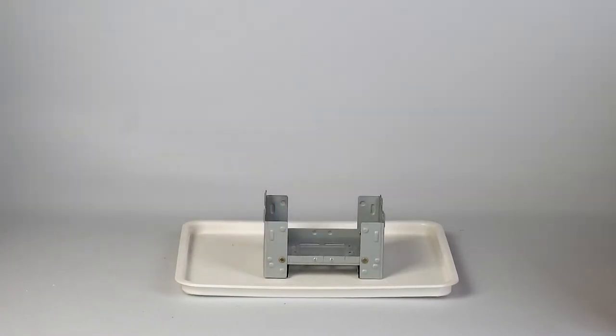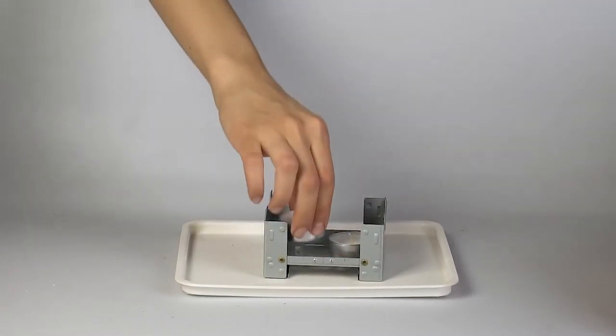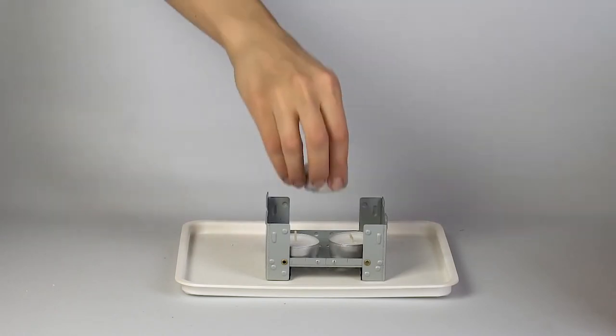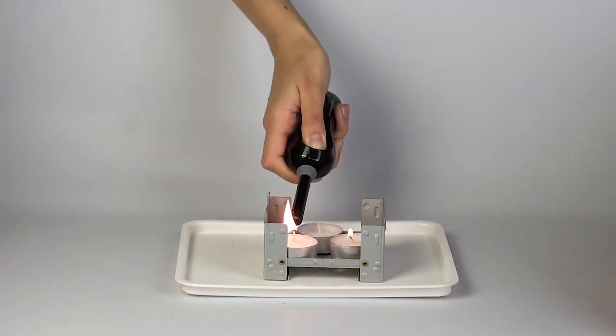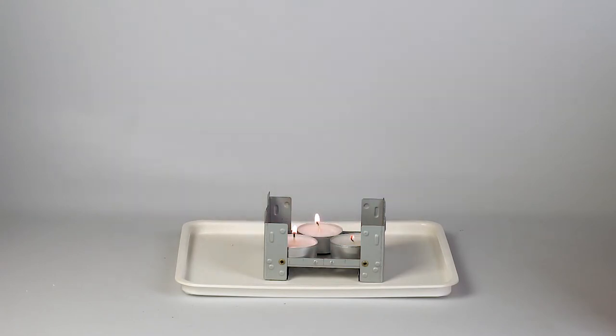Place the stove onto the tray and set three candles in it. Make sure you remove your protective gloves before lighting the candles. Light the candles and cover the stove with the flame diffuser.